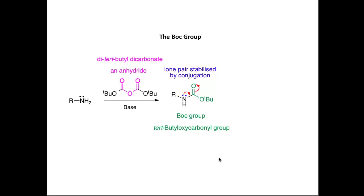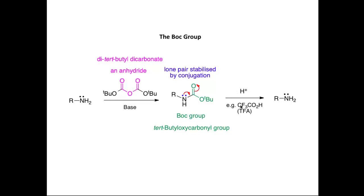Let's now look at one commonly used amine protecting group — the so-called Boc group, which is the tertiary butyloxycarbonyl group. The lone pair on the nitrogen is stabilized by conjugation with the carbonyl group, so a Boc-protected amine is much less nucleophilic than an amine itself. We can protect the amine by reaction with di-tert-butyl dicarbonate, commonly known as Boc anhydride. We react the amine with Boc anhydride in base to form the Boc-protected amine, and we can then recover the amine at the end of our synthesis.